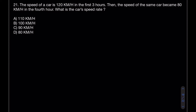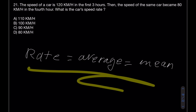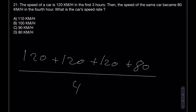Question 21: the speed of a car is 120 km/h for the first three hours, then becomes 80 km/h in the fourth hour. What is the car's average speed rate? Remember: rate equals average, and average equals mean — they all mean the same thing.